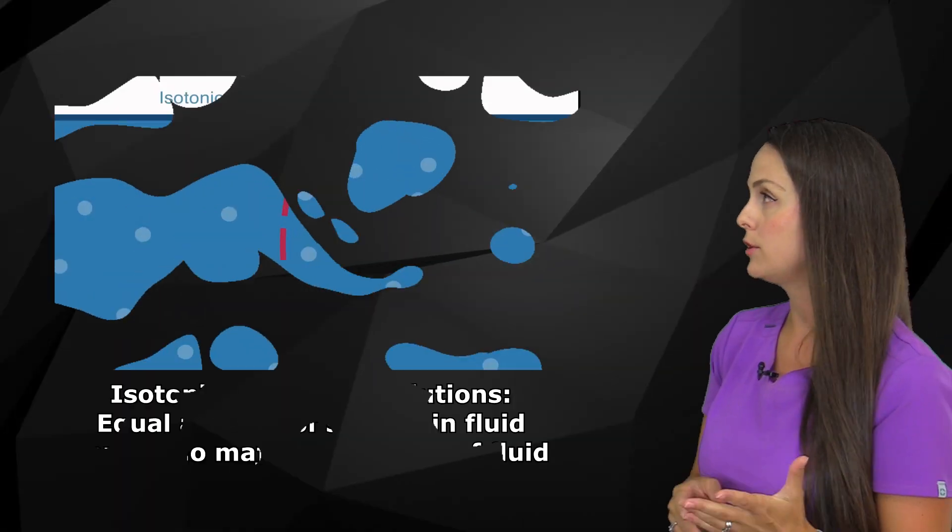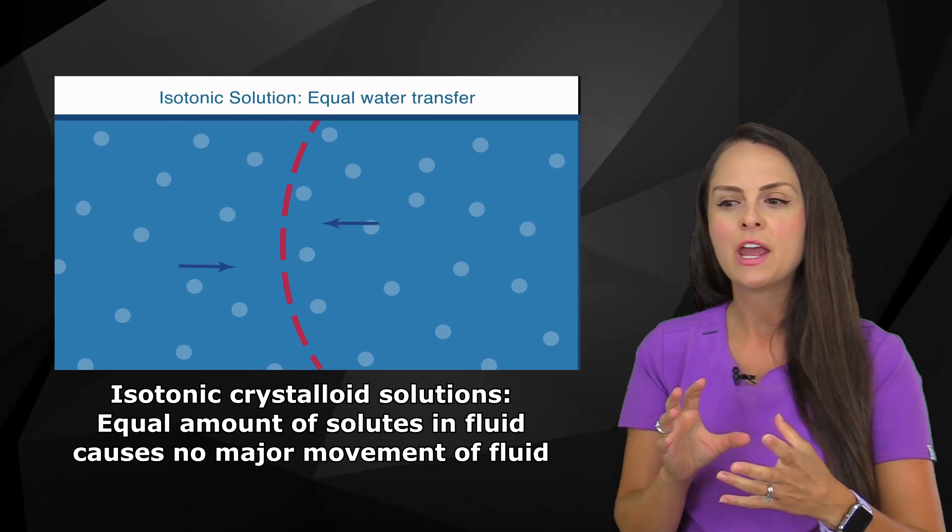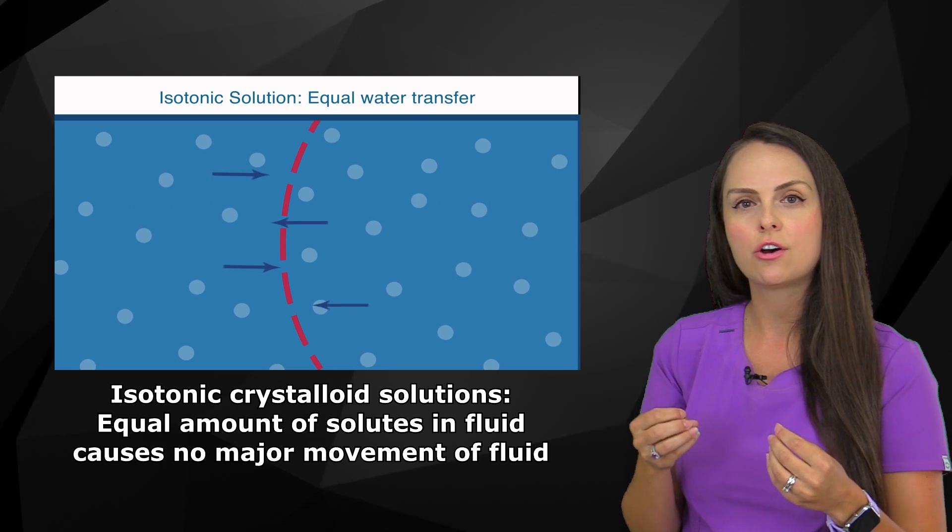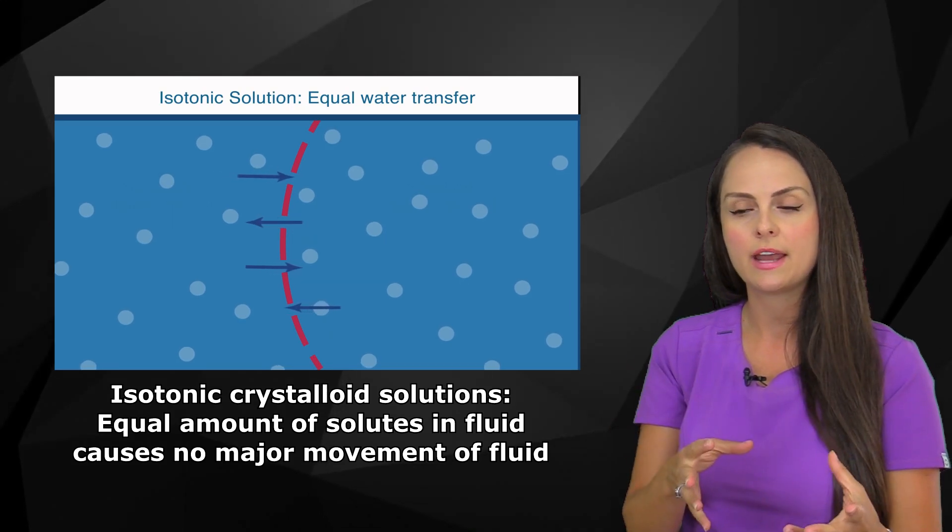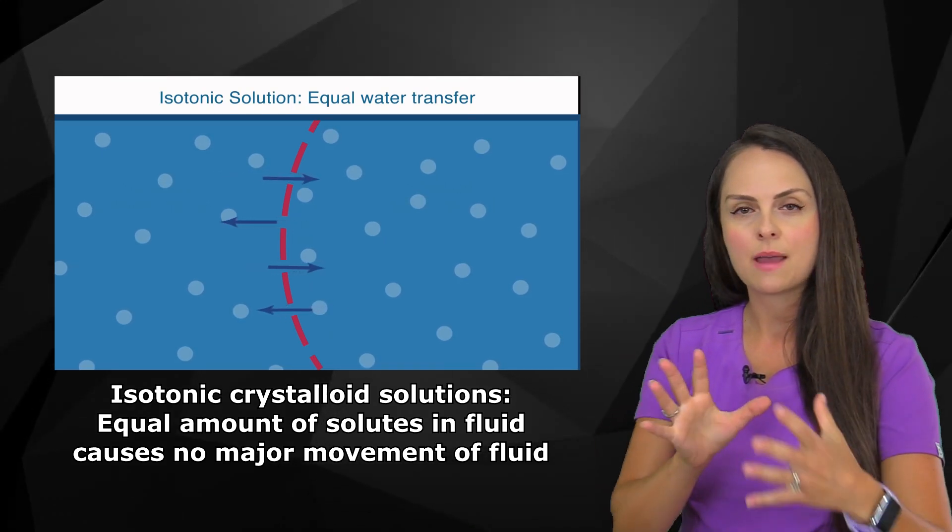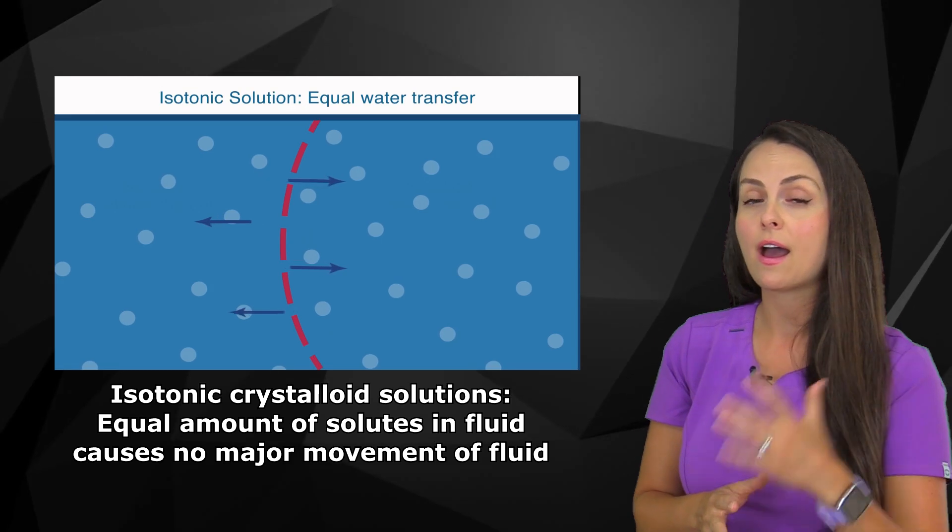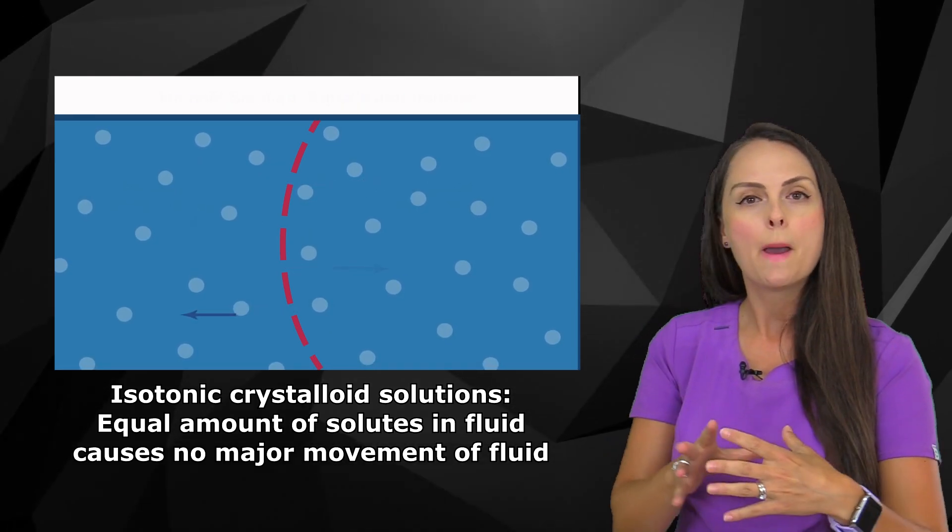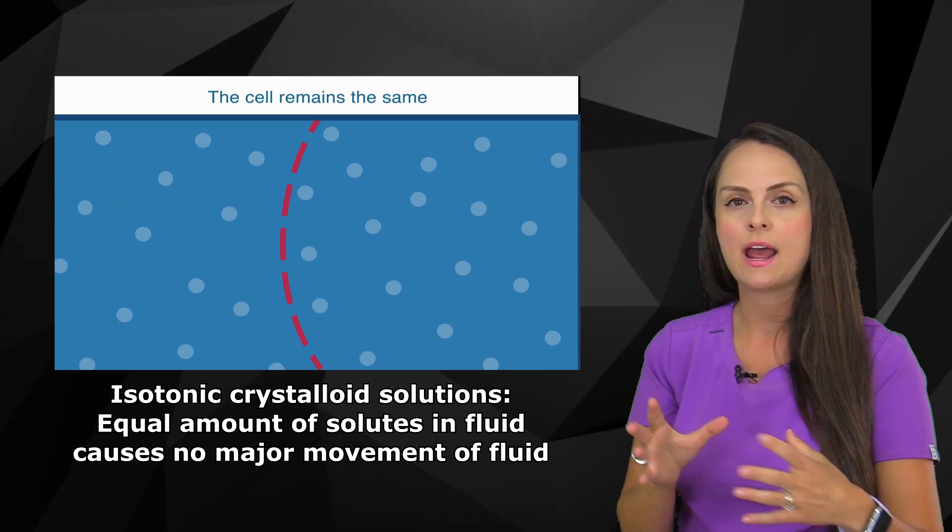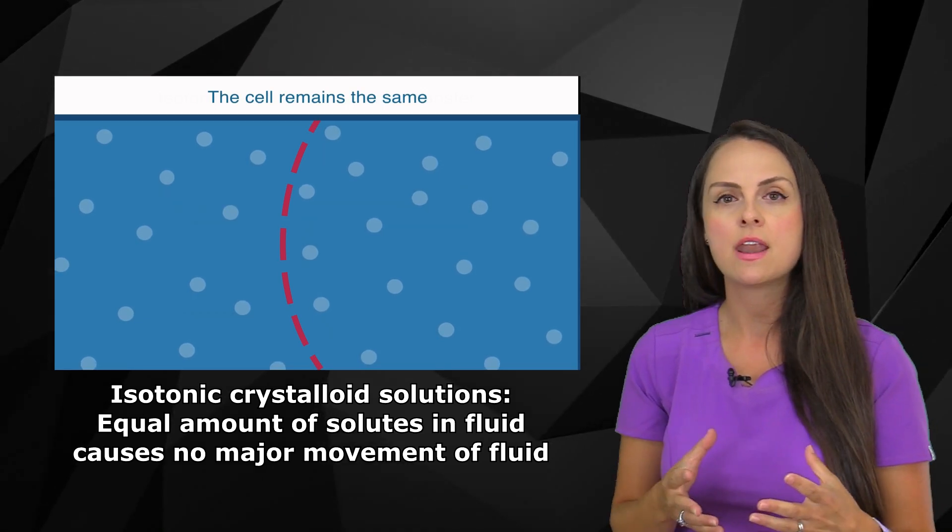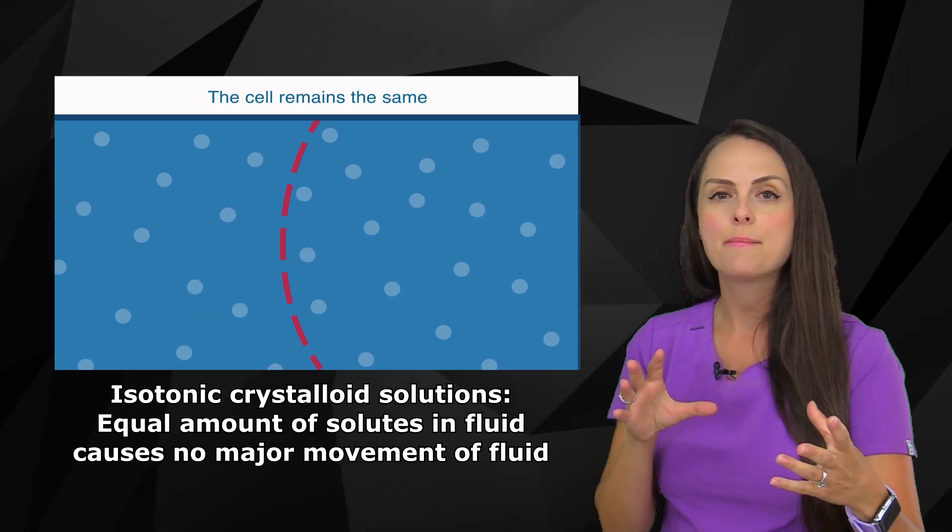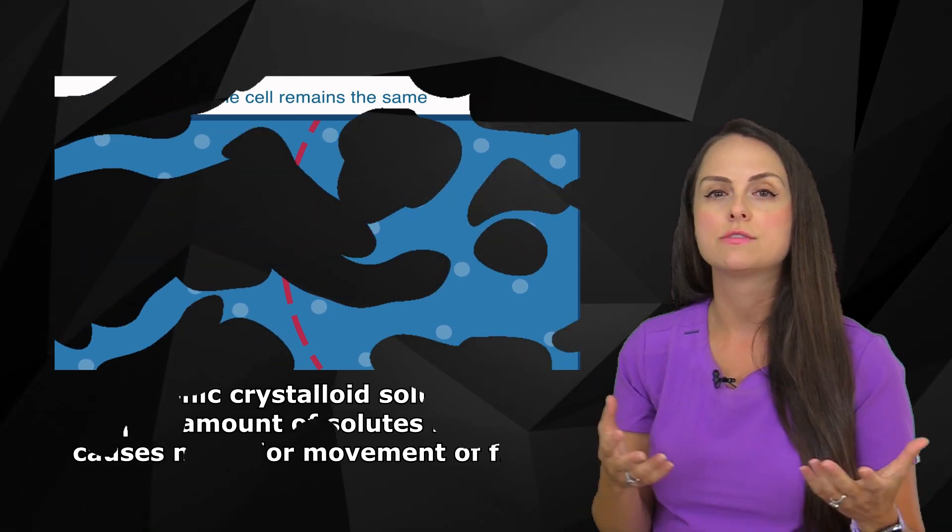And then we have isotonic fluids and iso just means equal. So that bag of fluid, its tonicity has the equal amount of solutes compared to your blood. So it's the same type of tonicity. So whenever we put that isotonic solution into the blood, it doesn't really cause this mass movement of fluid in and out of the cell, it really is just going to expand that intravascular space. And all of this is happening because of osmosis.